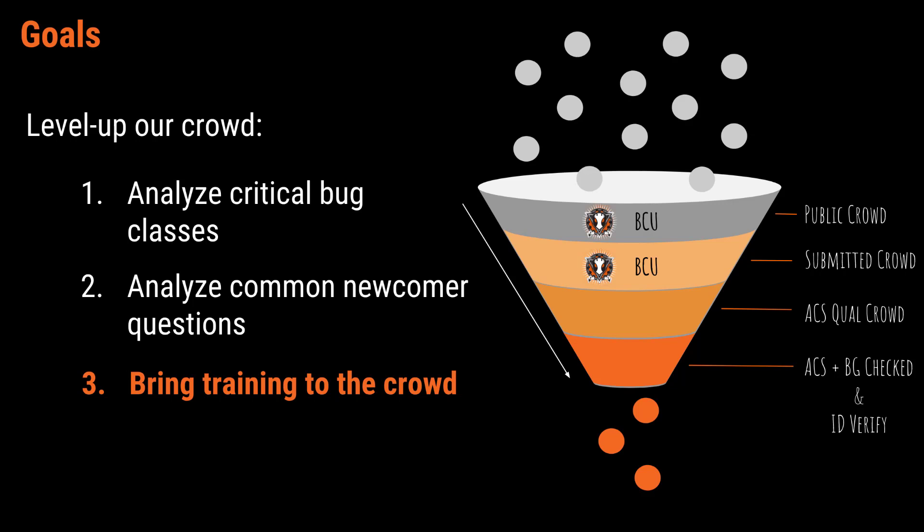On the right hand side we have a visualization of how members move through our crowd. At the top level of this funnel is the public crowd — people who come off the internet and try to hack on the public programs on Bug Crowd. Once you get some submitted vulnerabilities you move into the submitted crowd, and if these are valid non-duplicates and good bugs, they get triaged and you move into what's called our ACS qualified crowd.